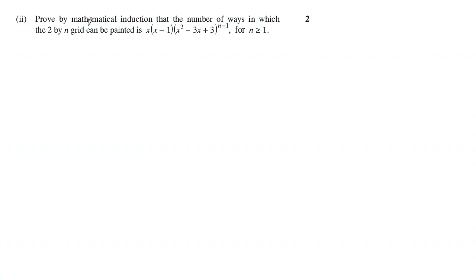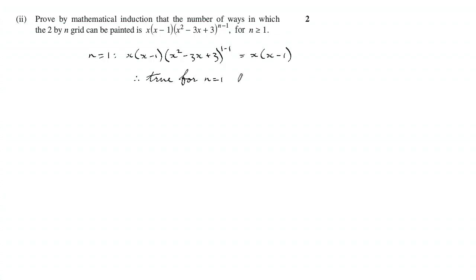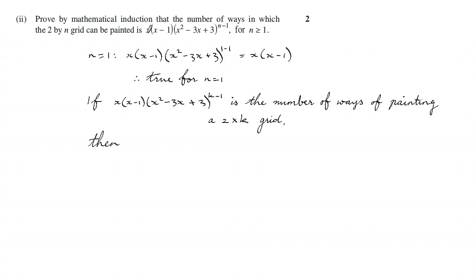Part two. For mathematical induction, first show the proposition is true for n equals 1. Plug 1 in: that term becomes 0, so if this is 1 you get x times (x minus 1), which we were told was the number of ways for n equals 1, so that's true by definition. Then assume it's true for n equals k. If that proposition holds with k instead of n, let's see how it helps us find the number of ways of painting a 2-by-(k+1) grid.